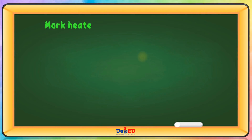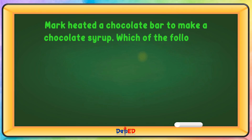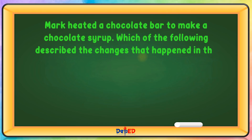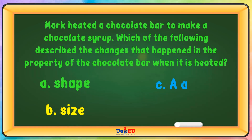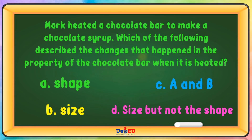Mark heated a chocolate bar to make a chocolate syrup. Which of the following describes the changes that happened in the property of the chocolate bar when it is heated? A. Shape. B. Size. C. A and B. Or D. Size, but not the shape. The correct answer is C.